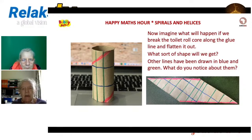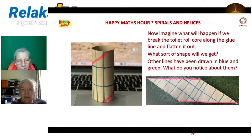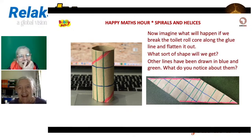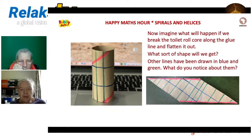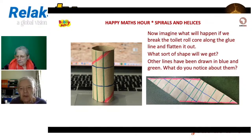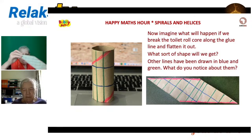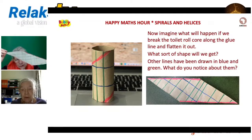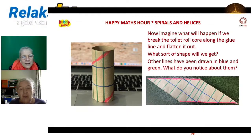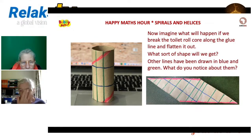Here's the toilet roll core flattened out - the pink lines are where it was originally glued. The other lines, instead of being vertical and horizontal, are now diagonal. Interestingly, the vertical lines are still parallel - straight lines parallel to the axis of the cylinder are preserved. Circles become straight lines when you unroll it - everything is straight, no longer curved. That has a lot to do with the cylindrical geometry.